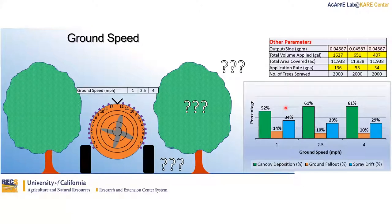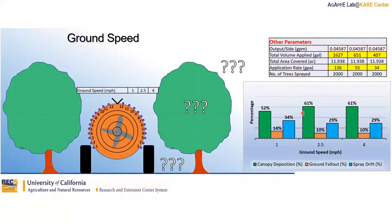Let's look at ground speed. Increasing ground speed generally decreases application rate — that is your GPA. We also learned that increasing ground speed increases percentage canopy deposition at the expense of ground fallout and spray drift. Bear in mind that the total gallons being applied is reduced, but there is an increase in the percentage deposition and a decrease in potential spray drift and ground fallout.